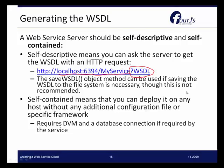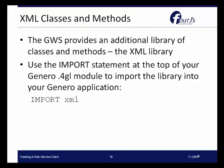The service must also be self-contained, meaning you can deploy it on any host without any additional configuration file or framework. For example, if your service requires a DVM and a database connection, the assumption is that those would be handled as part of the service. Genero helps meet these requirements through the tools provided. The Genero web services extension also provides an additional library of classes and methods called the XML library, which you can import the same way as the web services library com, by using import XML.